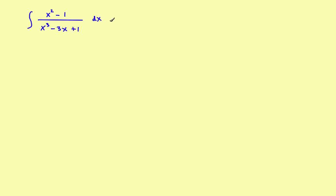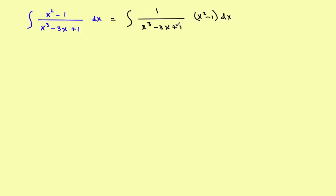For this problem, rewrite it as the antiderivative of 1 over x cubed minus 3x plus 1, with the numerator x squared minus 1 pulled to the side as dx. This makes it easier to recognize you have a 1-over-u type problem. In this case, let u be the denominator and use that to eliminate the numerator portion using u-substitution, converting it into a 1 over u problem.